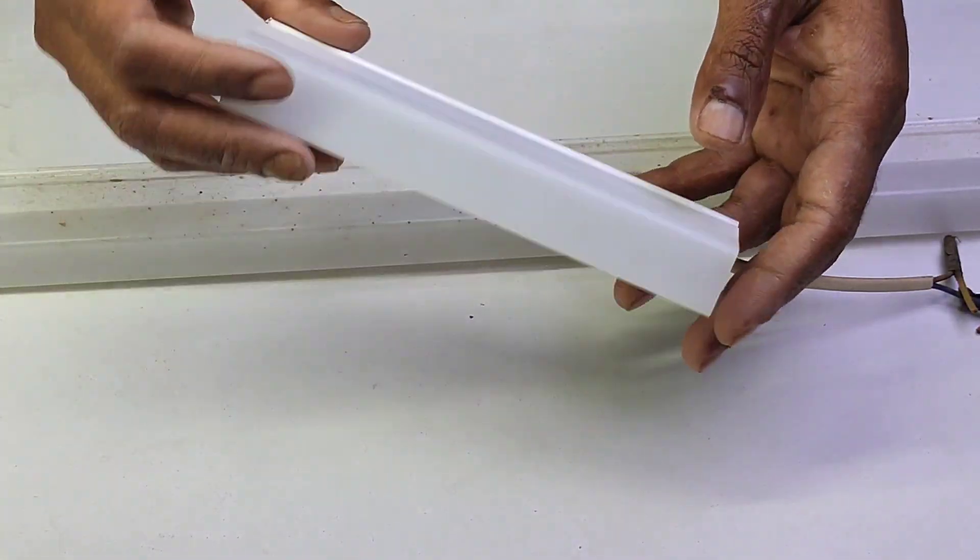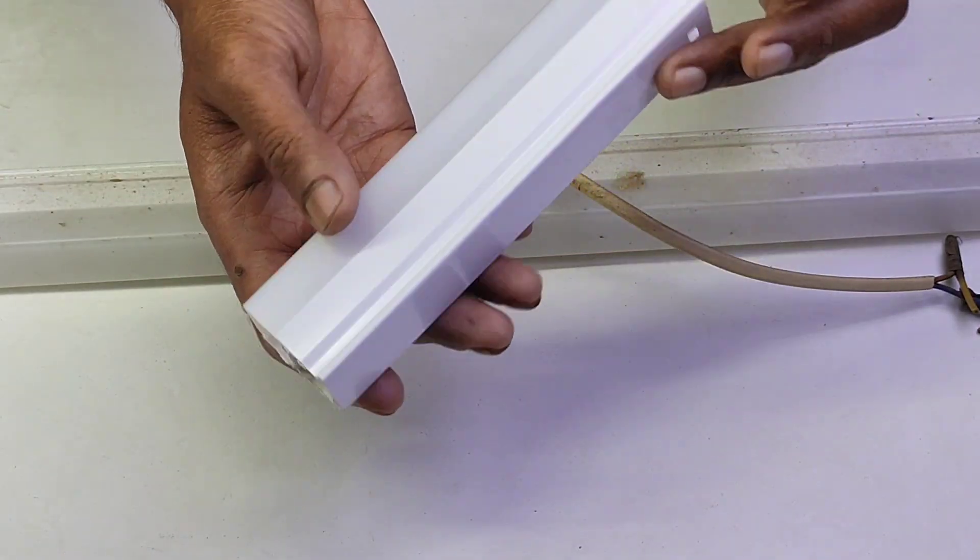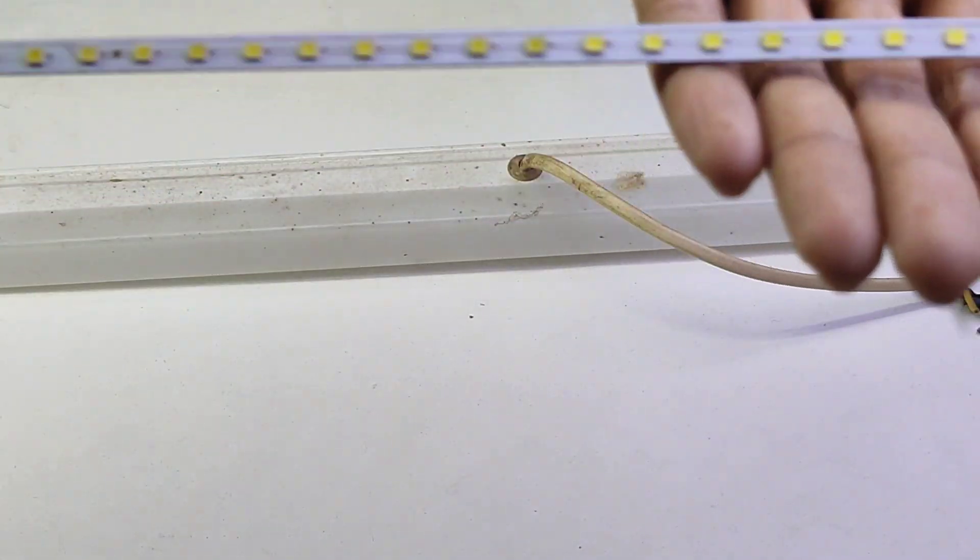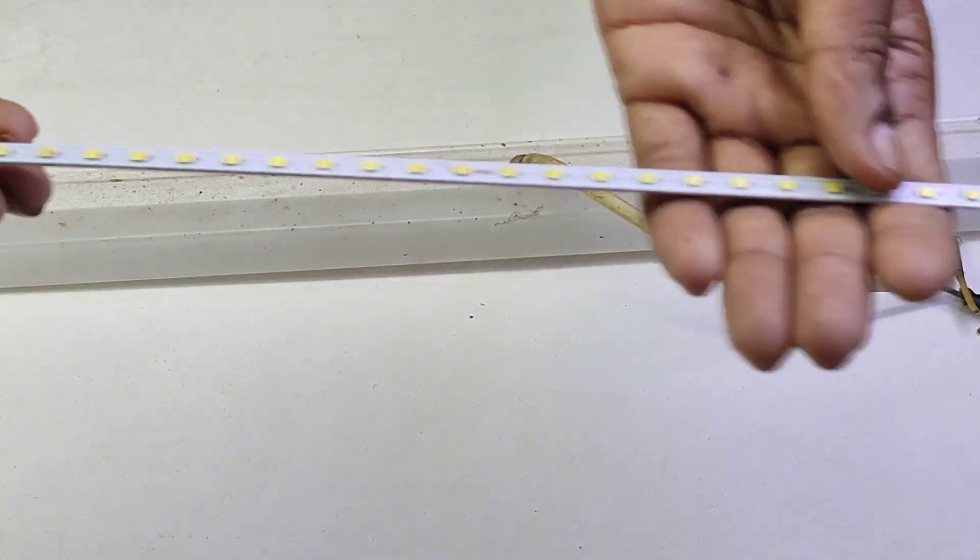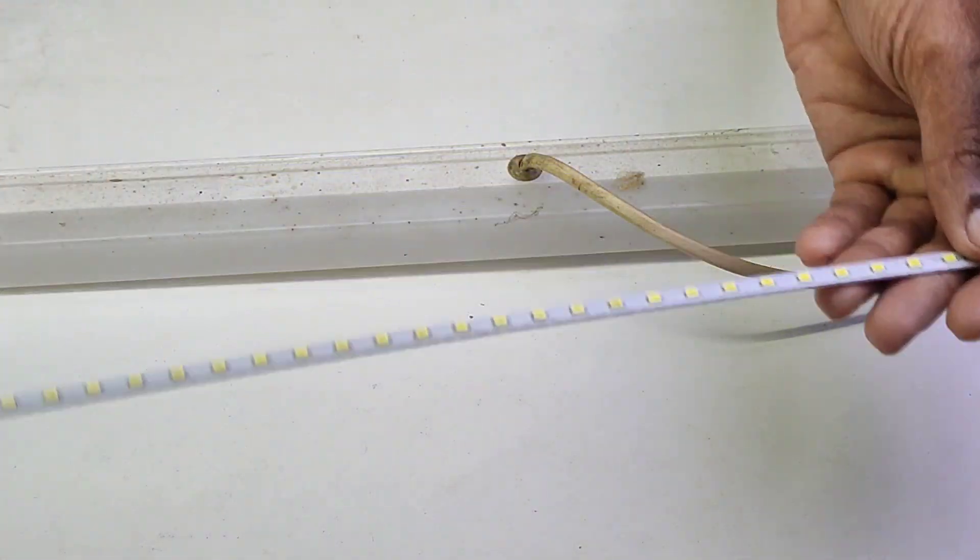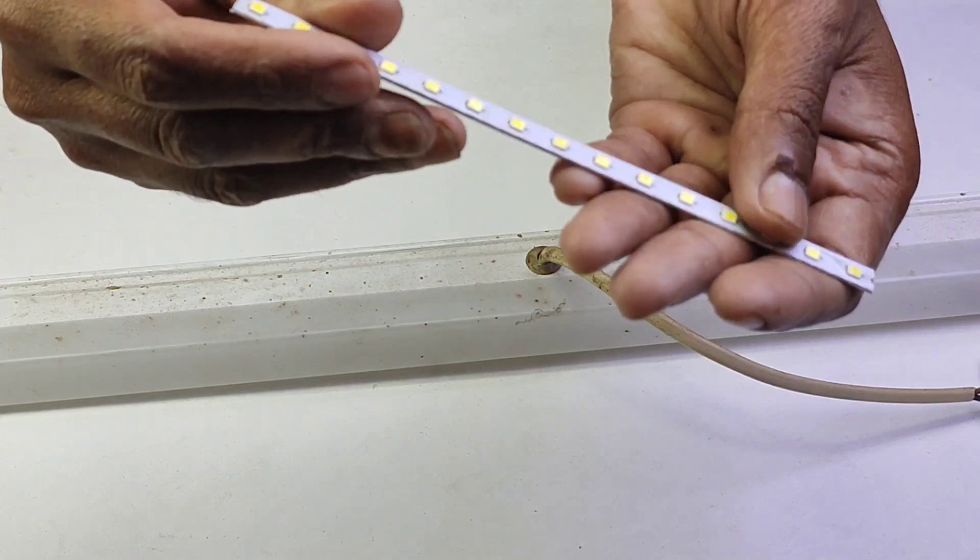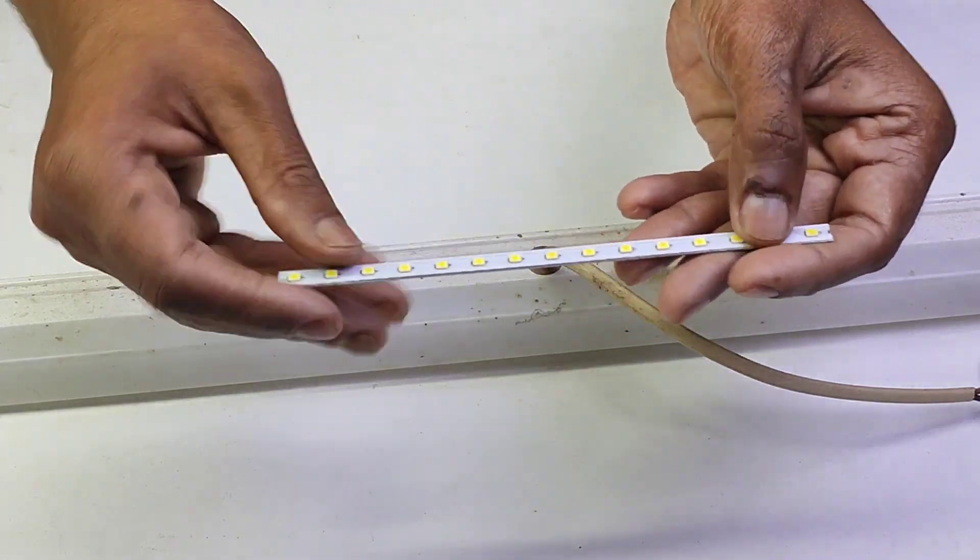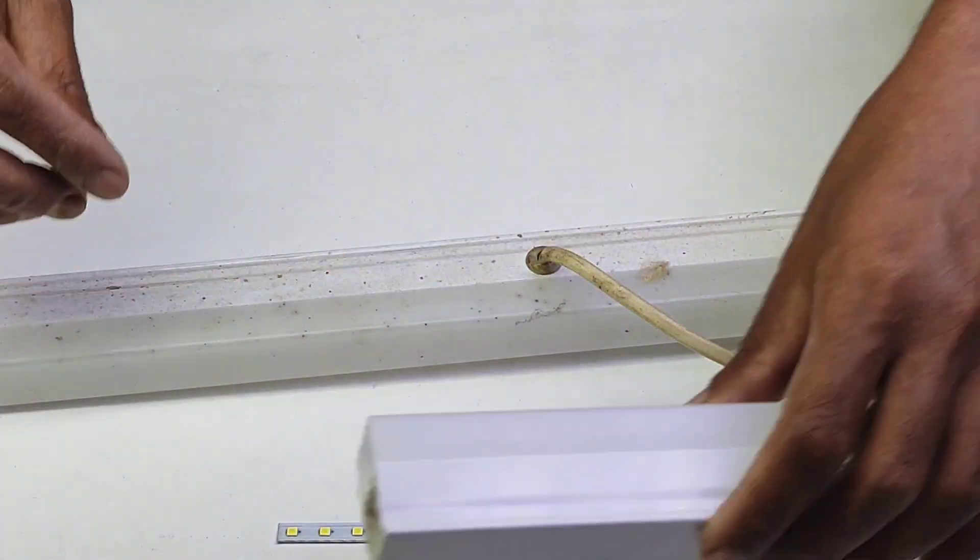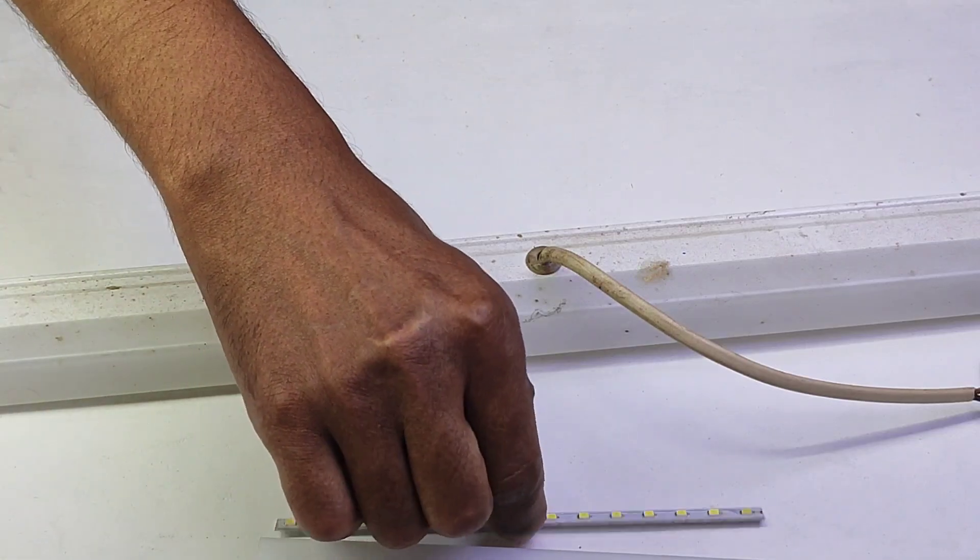This SMD LED strip belongs to another broken LED tube light. The tube light was broken but the strip is good. I have cut a small piece of the LED strip with 15 LEDs. This LED strip can't be used as is since all the LEDs are in series. I need to modify it first.